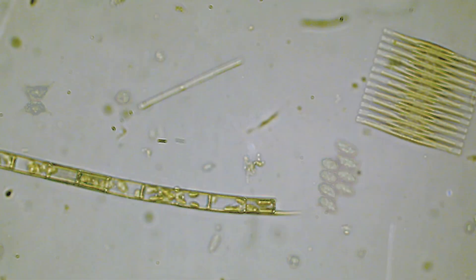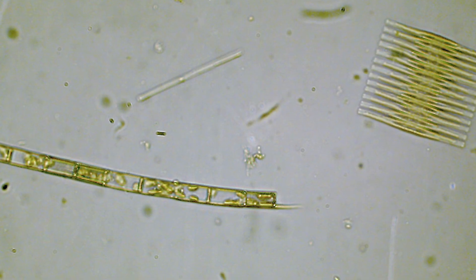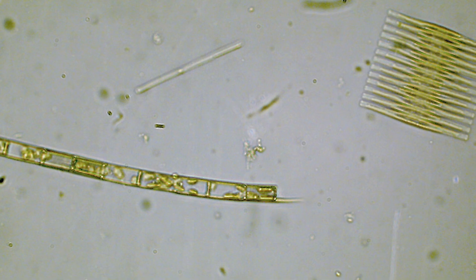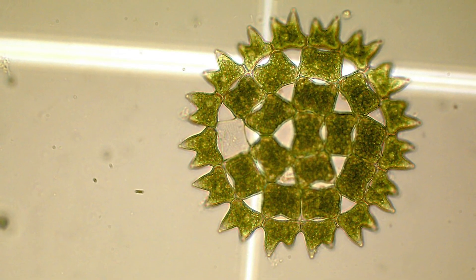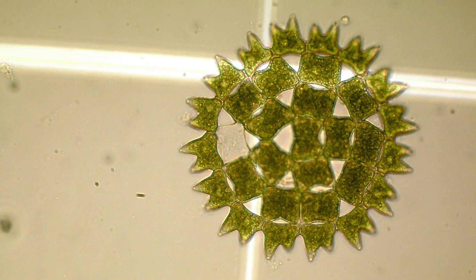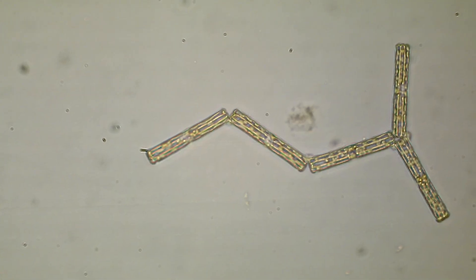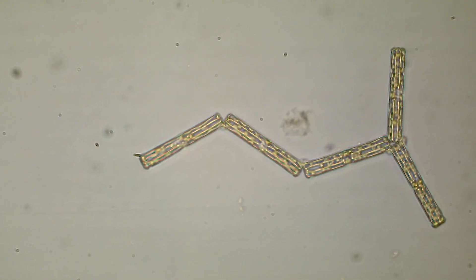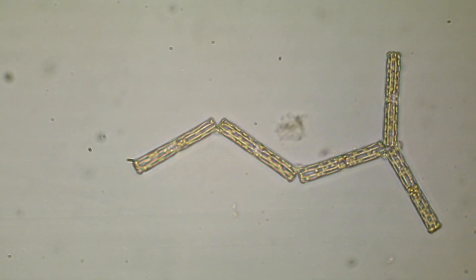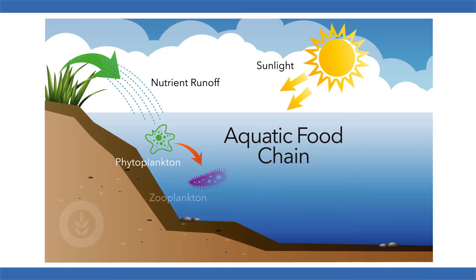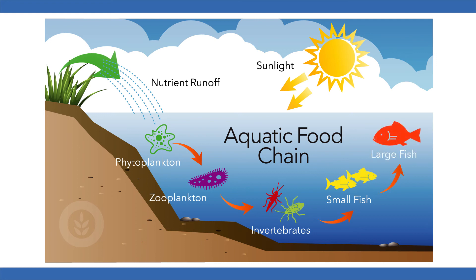Similarly with diatoms — diatoms like a higher silica-to-phosphorus ratio. So keeping those phosphorus levels low may give those better algae a foothold in the system and allow them to out-compete some of the nuisance, noxious, and smelly types that you don't want. The strategic removal of phosphorus supports the fishery from the bottom up, allowing the better types of algae to move up and get those nutrients into the big bass that you want.